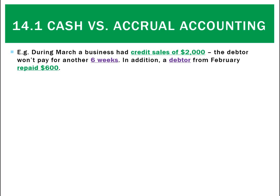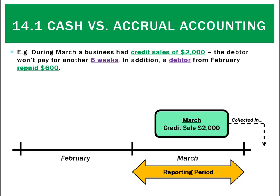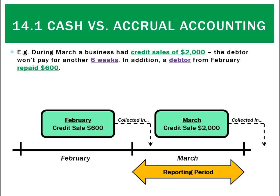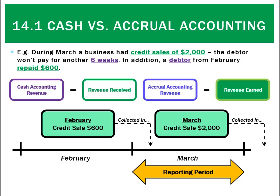Another reason why we use accrual accounting is because many transactions are on credit. For example, during March we had credit sales of $2,000 but we're not going to collect those for another six weeks. Also, a debtor from February paid us $600. Under cash accounting we just look at how much revenue has been received, so in March we'd record revenue of $600 — but that's not correct because it's actually a sale from February. We're not matching our reporting periods correctly; we're recording a February sale as a March sale just because we got the money.